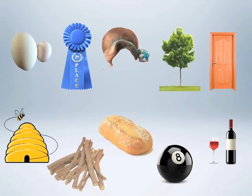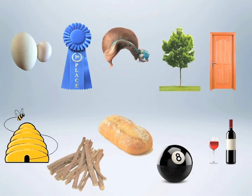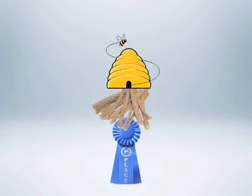Here is my breakdown for numbers: zero is a goose egg; one is a blue ribbon or first place; two is a hairdo — do, duo, two; three is a tree; four is a door; five is a beehive; six is a pile of sticks; seven is bread — bread has leaven, leaven, seven; eight is an eight ball; nine is wine. When I want to construct numbers greater than single digits, I stack them. For example, for the number 165, I have a blue ribbon under a pile of sticks under a beehive.